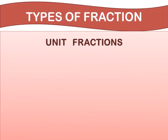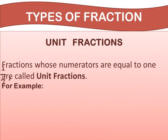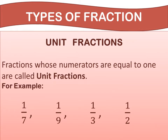The next topic is unit fractions. Fractions whose numerators are equal to 1 are called unit fractions. For example, 1 upon 7, 1 upon 9, 1 upon 3, and 1 upon 2. In these examples, all the numerators are 1, so these are examples of unit fractions.